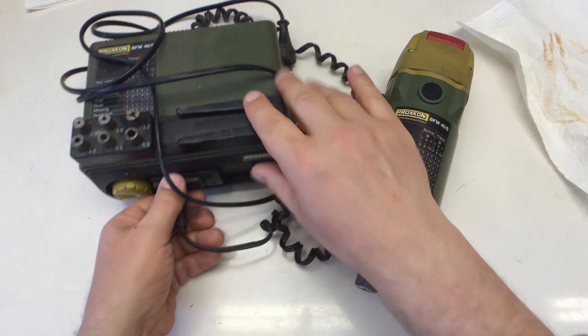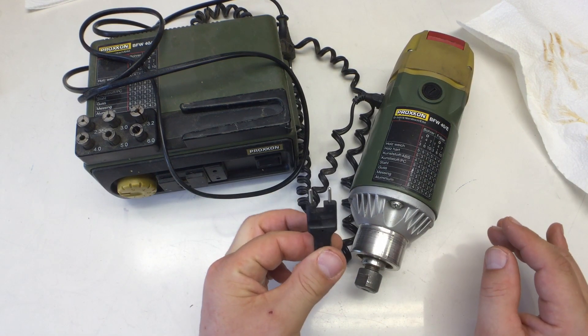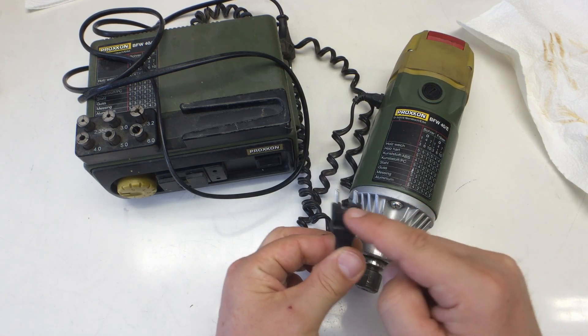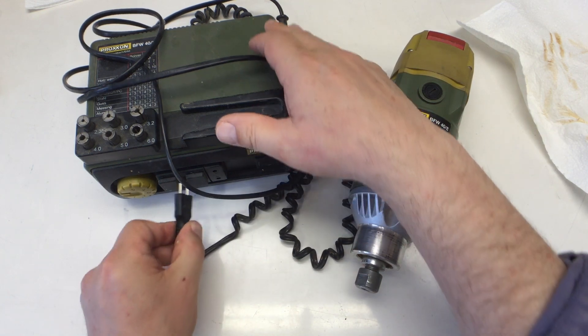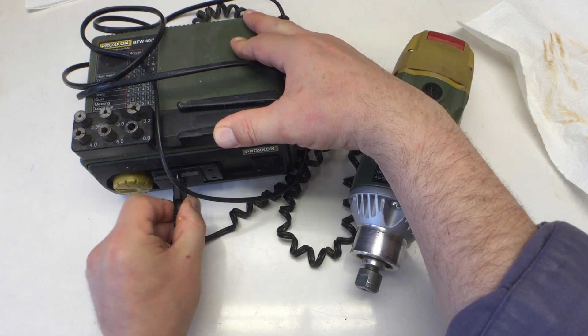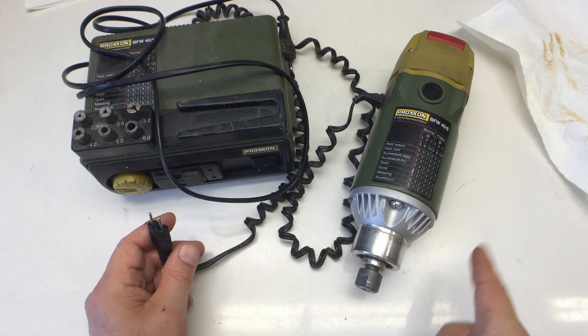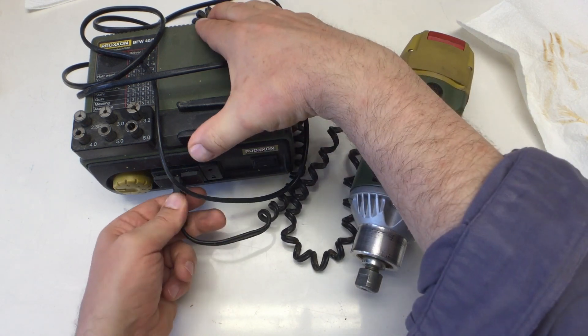Anyway, let's disconnect that thing here and in case you're wondering that is marked plus minus, and the connector here, the plug, is a little bit asymmetric so you can't really put it in the wrong way around and convert your spindle to a counterclockwise spinning one. That's not possible.